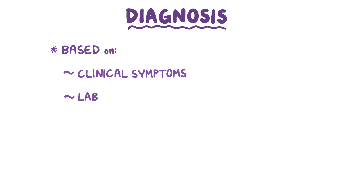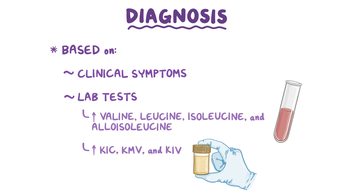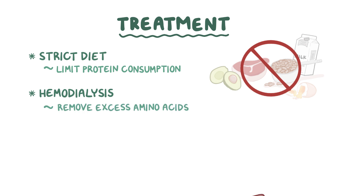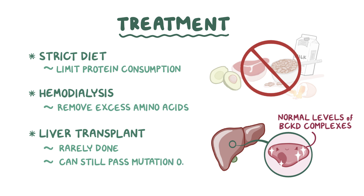Diagnosis for maple syrup urine disease is based on the presence of clinical symptoms and lab tests that show elevated valine, leucine, isoleucine, and alloisoleucine in the blood, and increased alpha-ketoisocaproate, alpha-keto-beta-methylvalerate, and alpha-ketoisovalerate in the urine. The main treatment consists of a strict diet that limits protein consumption. In people with severe symptoms, hemodialysis is sometimes used to remove the excess amino acids. The only cure is a liver transplantation, because the new hepatocytes will have normal levels of BCKD complexes, though this procedure is rarely done and the individual can still pass the mutation onto their children.